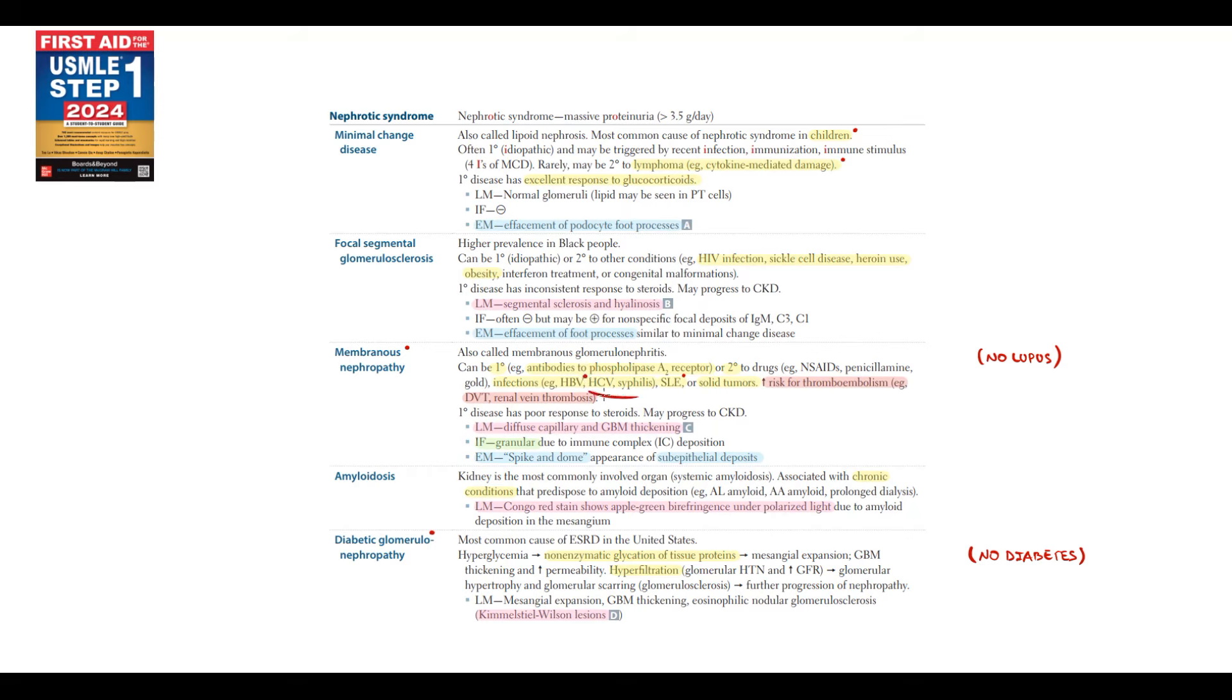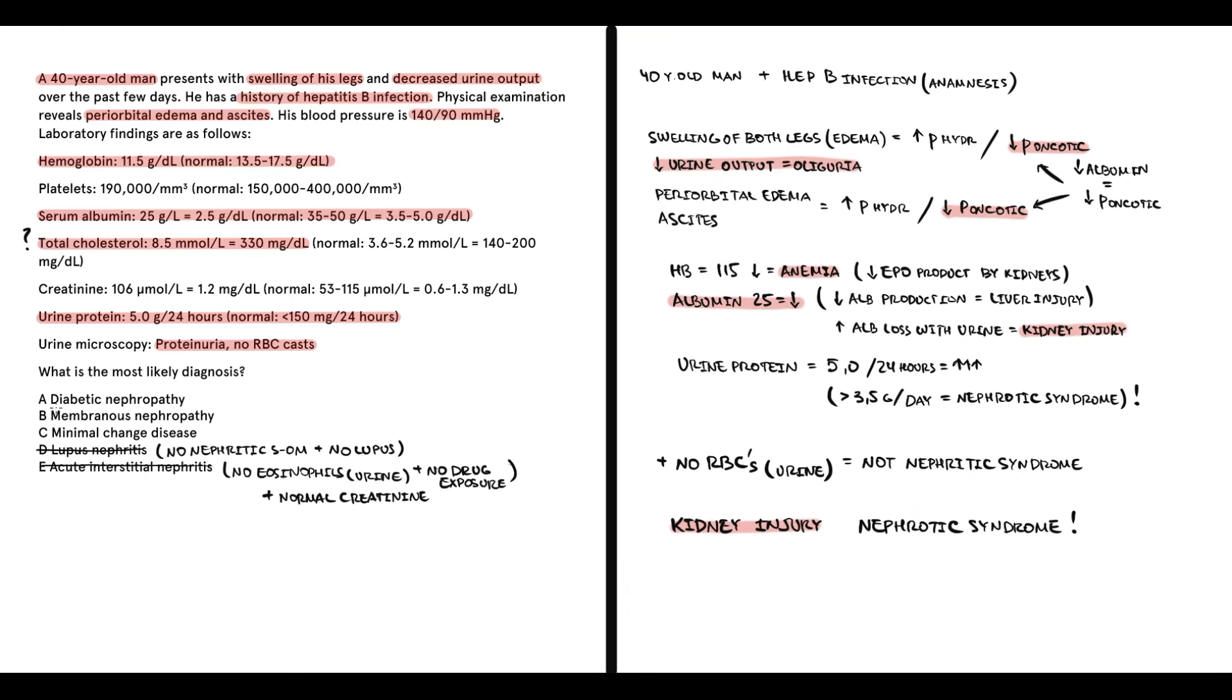And as we see, nephrotic syndrome which is associated with infections like hepatitis B, hepatitis C and syphilis is membranous nephropathy. So the correct answer here is membranous nephropathy. And in tests like this, you determine whether it's nephritic or nephrotic syndrome. And within the group, you search for a subtype based on a patient's anamnesis or disorders.